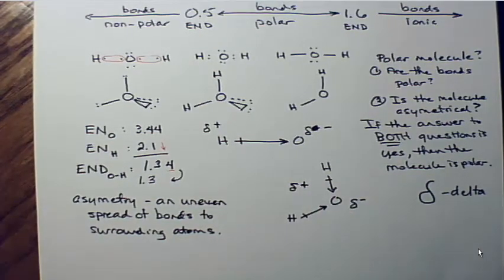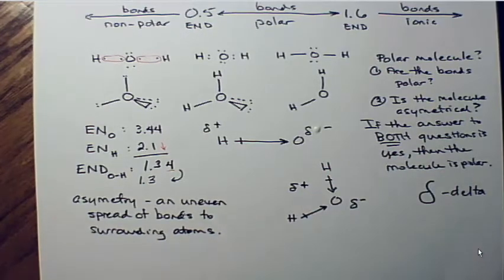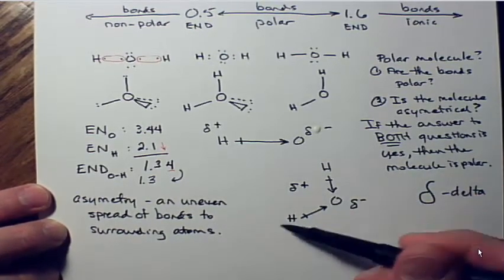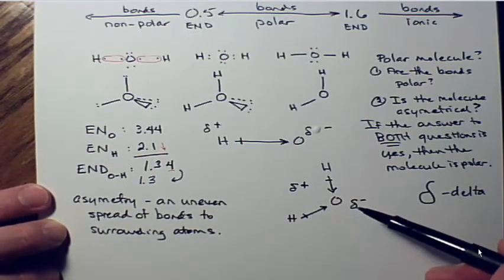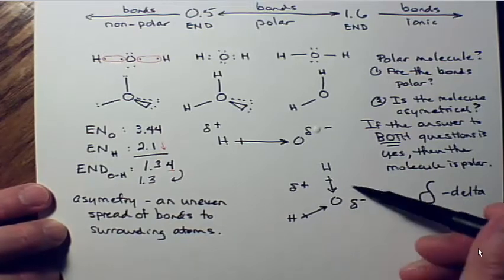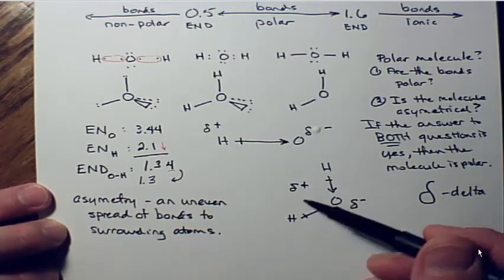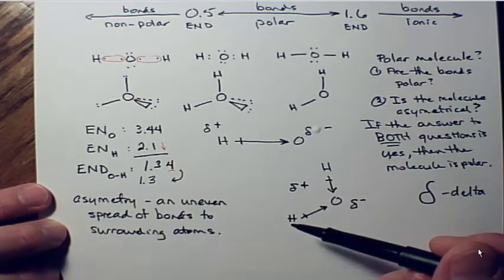Looking at the overall molecule, we can say it's partially negative on the oxygen side because you can think of it like the flow of a river — the electrons are flowing in this direction toward the oxygen. So this side overall is going to have more electrons, and the hydrogen side up here is going to be electron-poor.